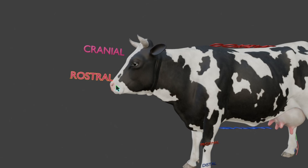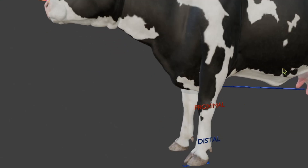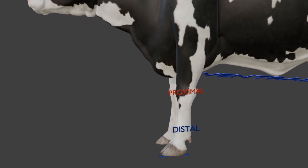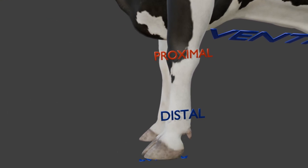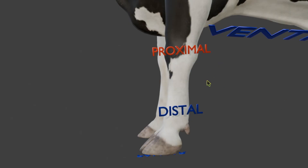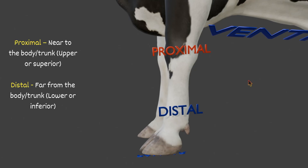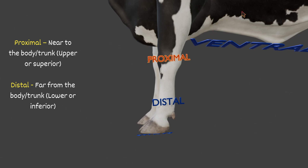Now we will discuss some limb-specific terms. This is one of the forelimbs of the animal. We use the term proximal here. Proximal means near to the body or trunk — the upper part of the limb. So proximal means near to the body or trunk, or simply the upper or superior part of a limb.